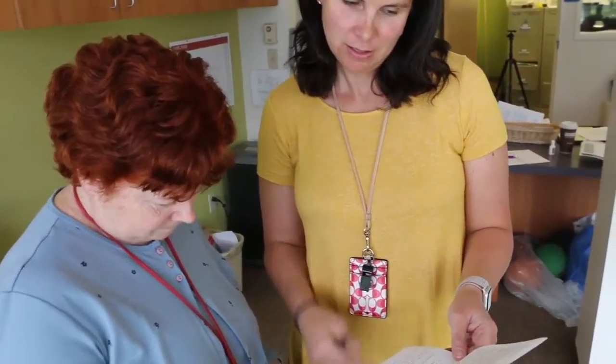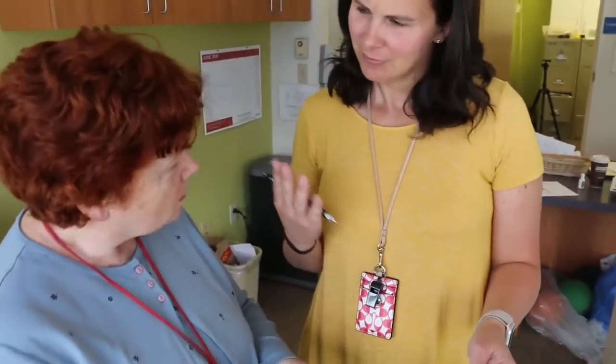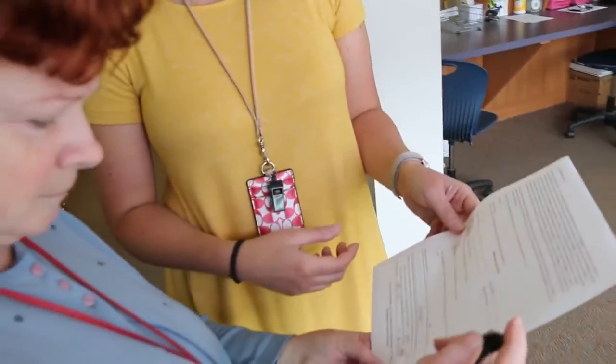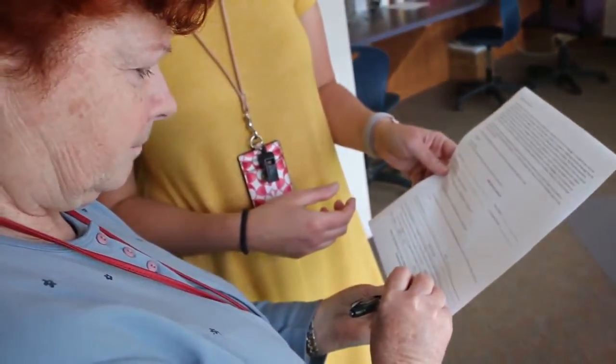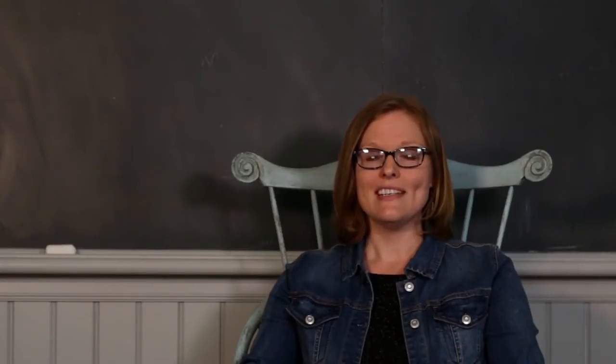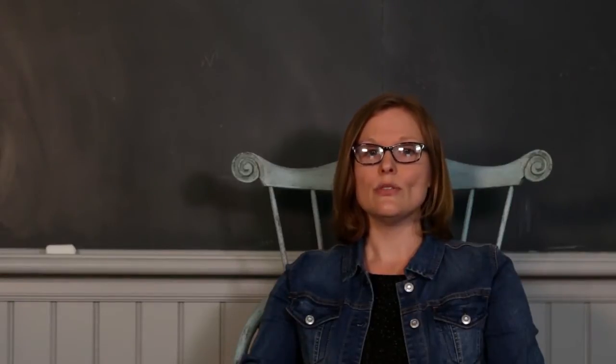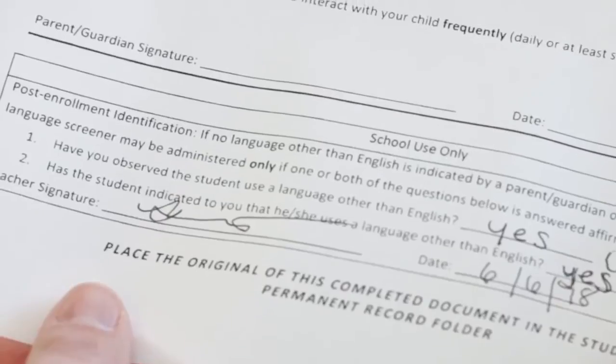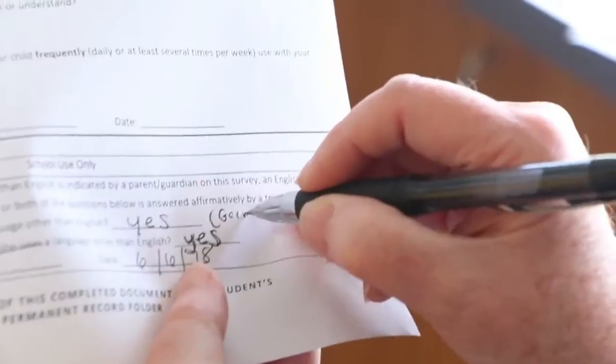It's important to note that if teachers observe the student using a language other than English, or if the student later indicates that he or she has a primary or home language other than English, and teachers perceive a possible need for English Language Support Services, an English Language Proficiency Screener may be administered. The School Use Only section at the bottom of the Language Use Survey must be completed prior to screening the student.